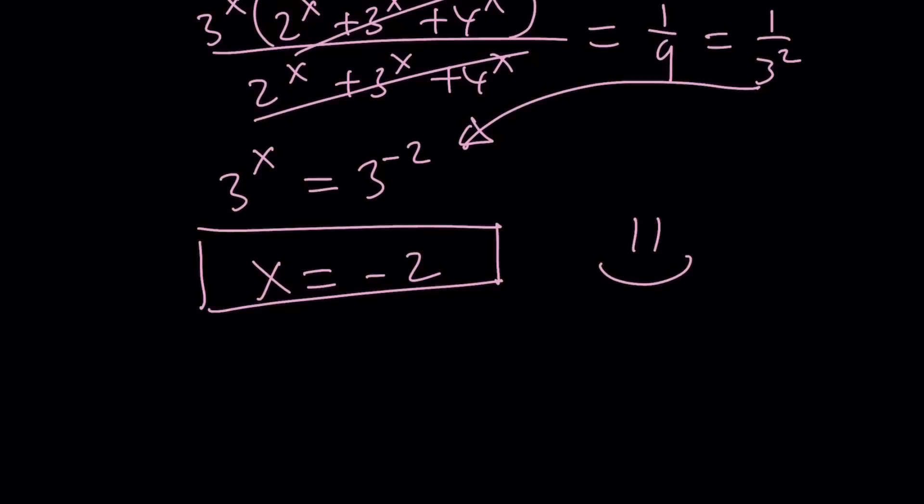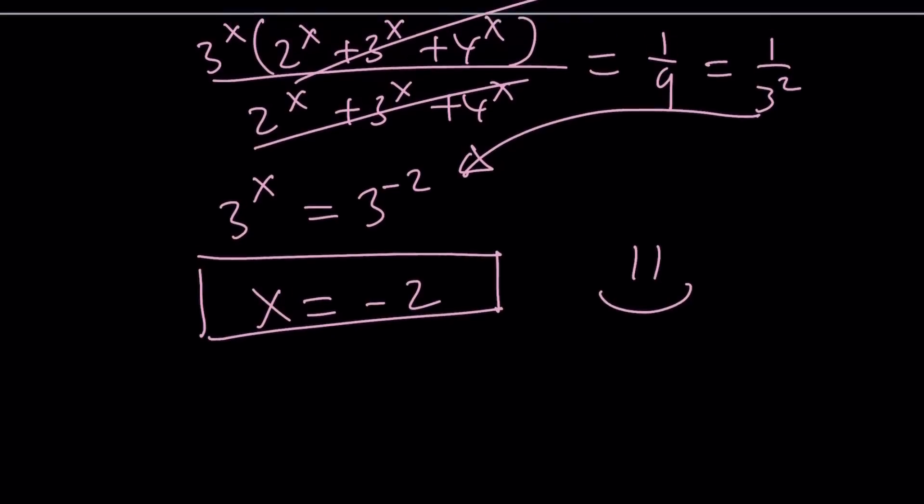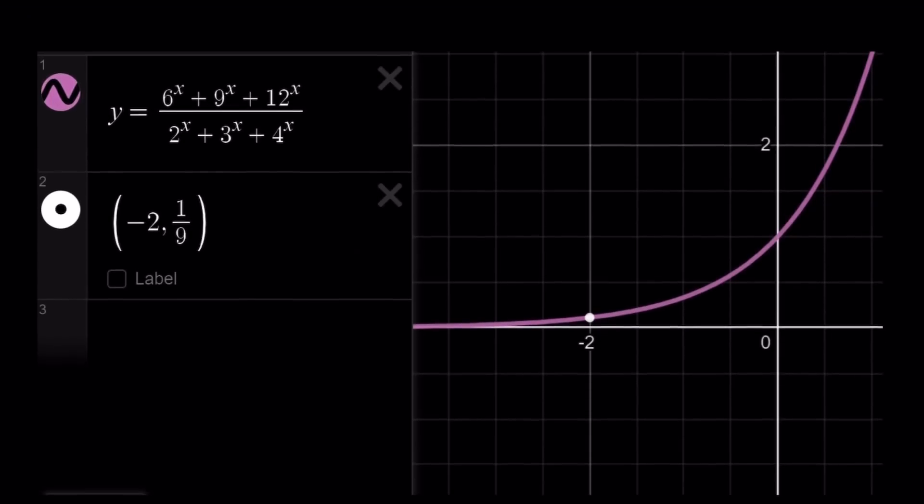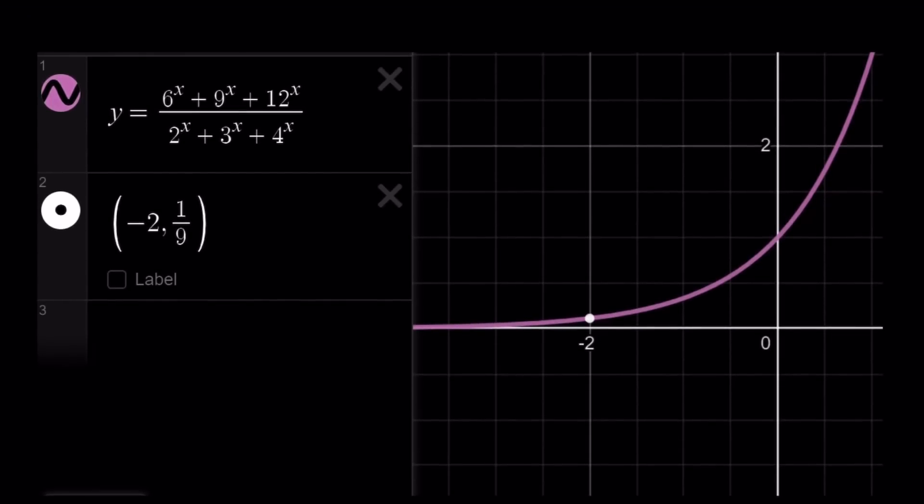So hopefully you'll be convinced that this expression simplifies nicely. So here's the graph of our function, y equals 6 to the x plus 9 to the x plus 12 to the x, divided by 2 to the x plus 3 to the x plus 4 to the x. And as you can see, it is actually an exponential function, a simple one, because this is the same thing as 3 to the power x, and at negative 2, it is going to be 1 9th.